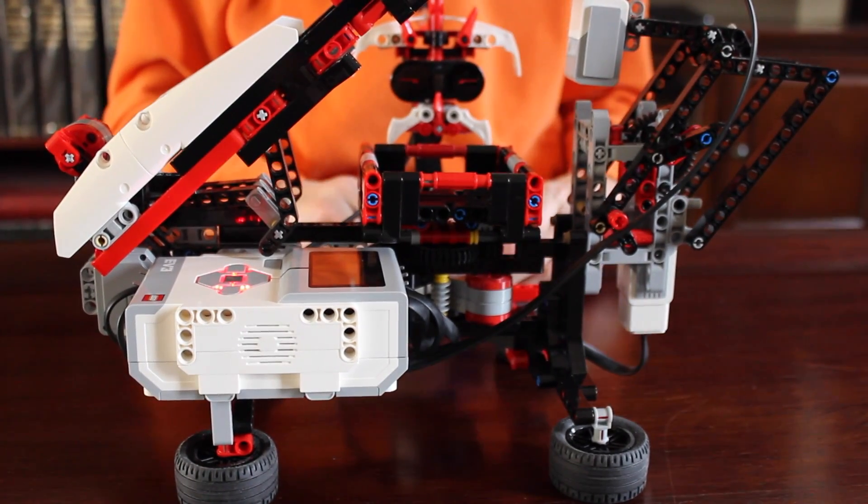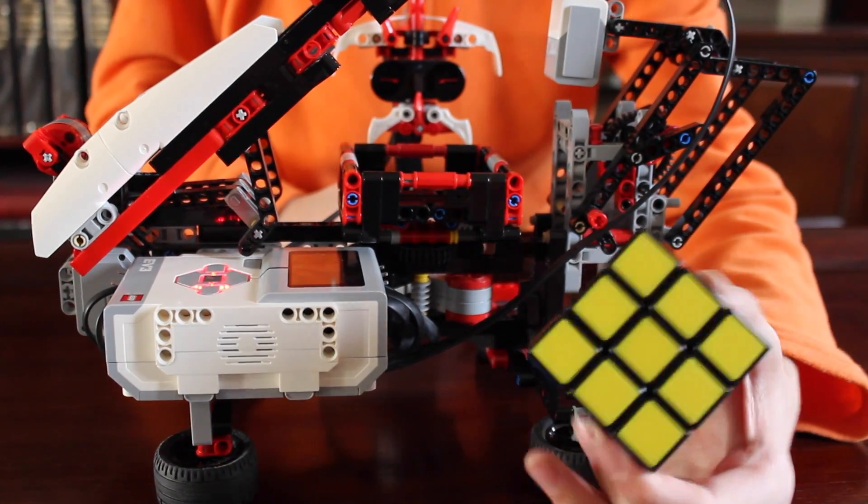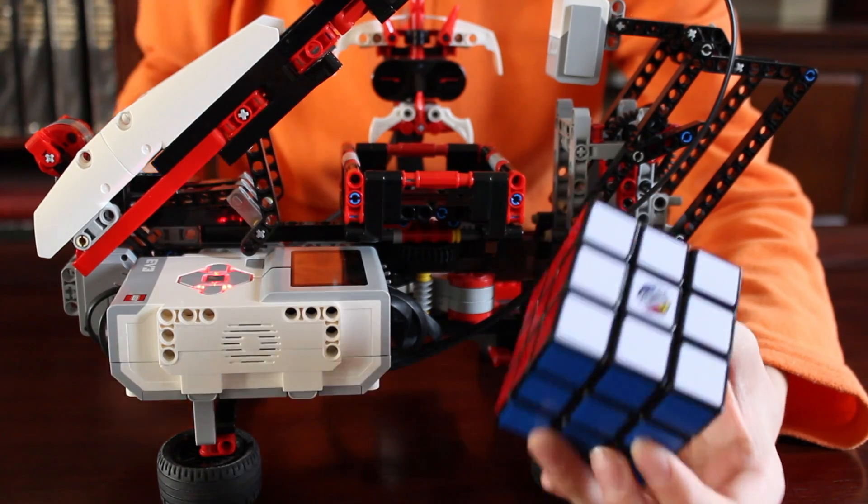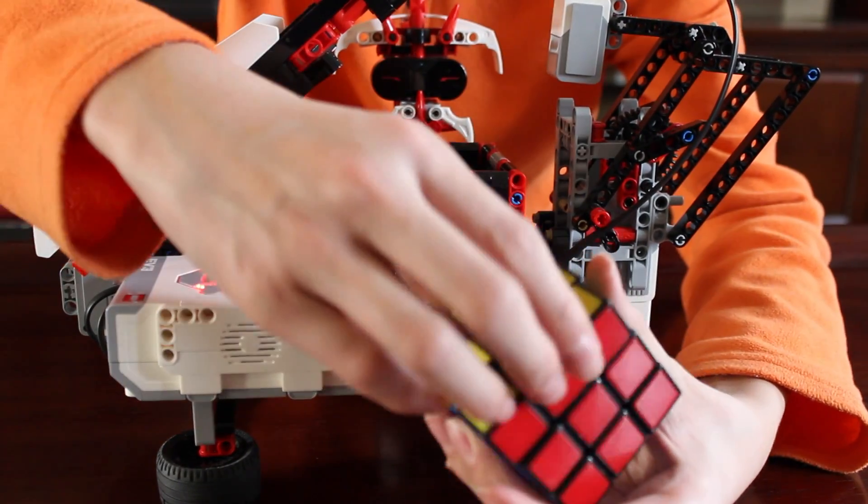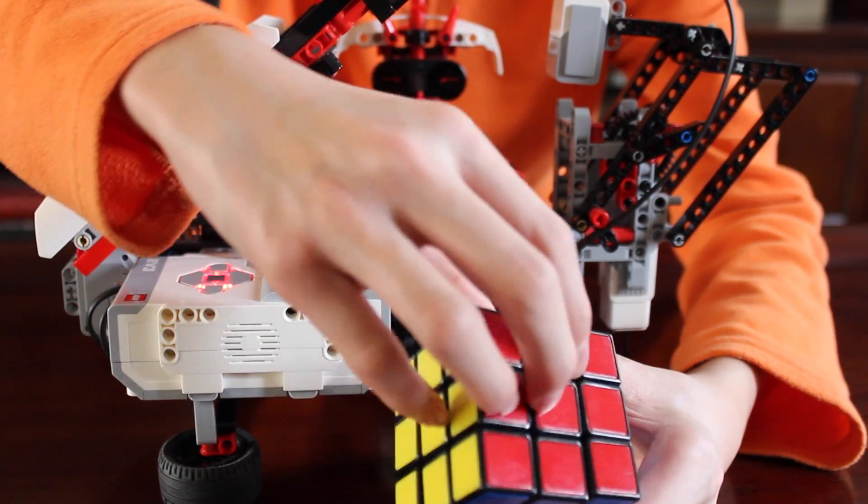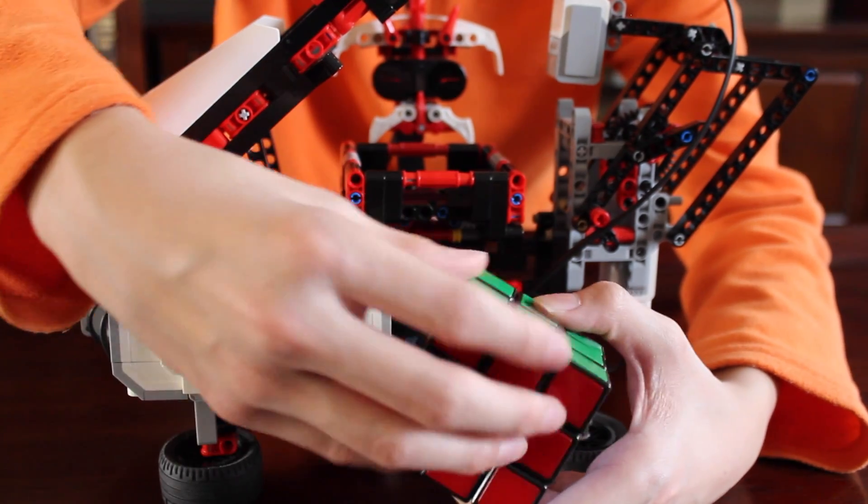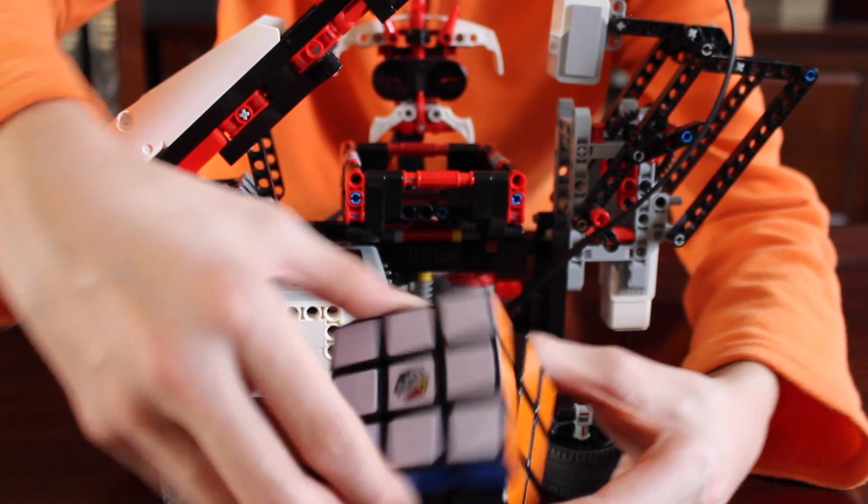Alright. Now, for some fun facts. So, the first fun fact is that I noticed that Mindcuber doesn't solve the Rubik's Cube in layers. It solves Rubik's Cube in corners. So, there's a corner, a 2x2 corner, and then it does the rest.